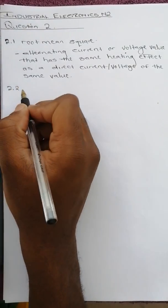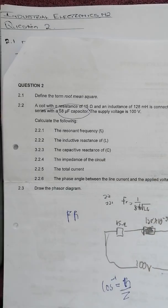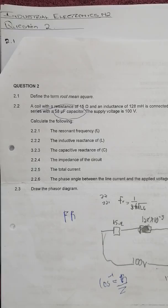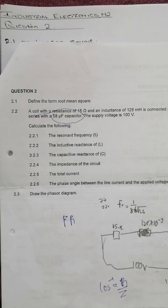Then question 2.2 says a coil with a resistance of 15 ohms and an inductance of 128 millihenries is connected in series with a 58 microfarad capacitor. The supply voltage is 100 volts. Calculate the resonant frequency, inductive reactance, capacitive reactance, the impedance of the circuit, the total current, the phase angle between the line current and applied voltage. Draw the phasor diagram.